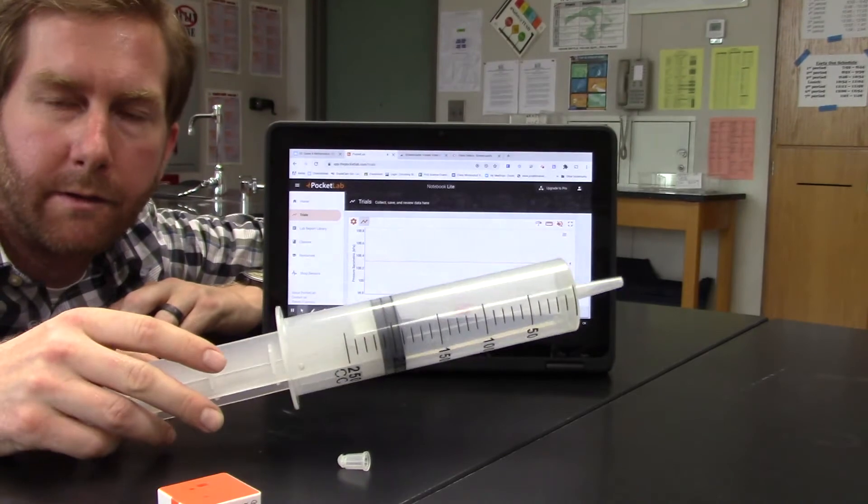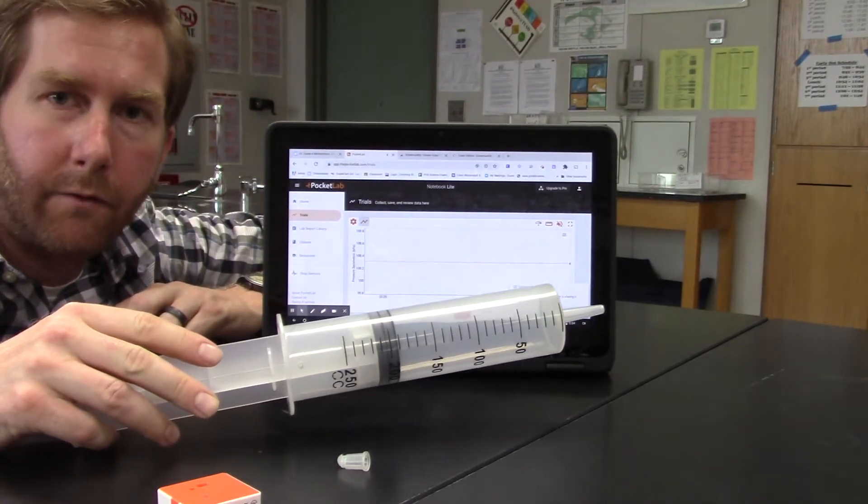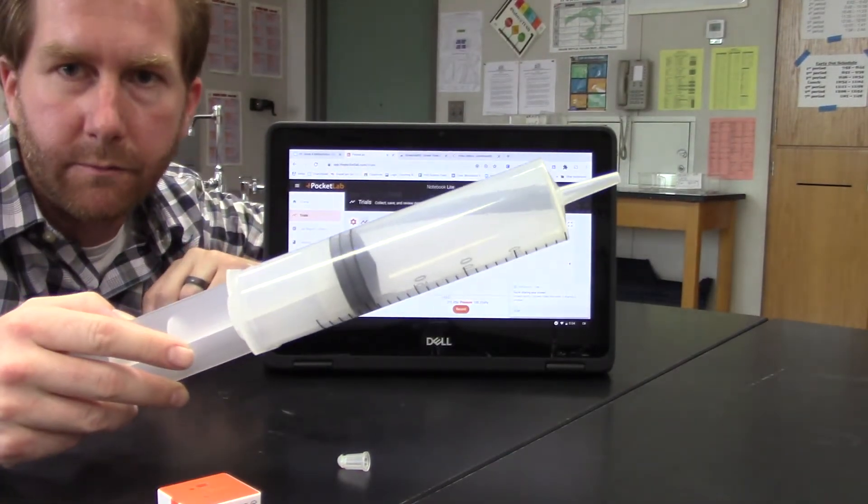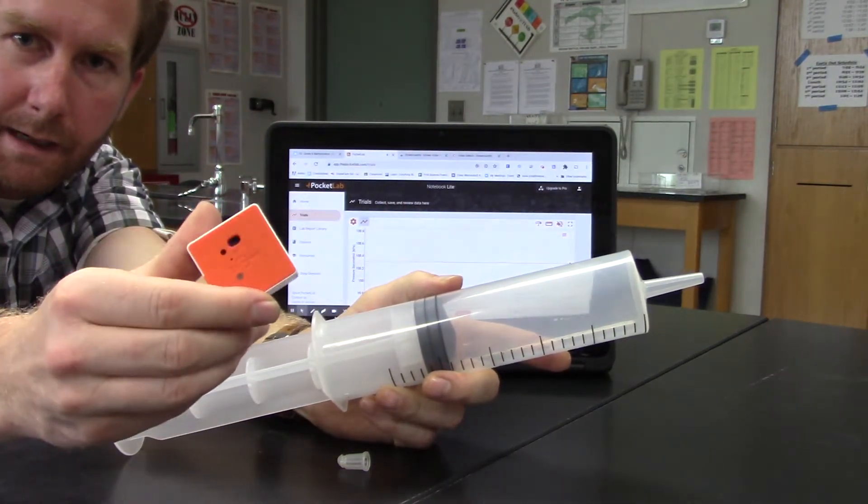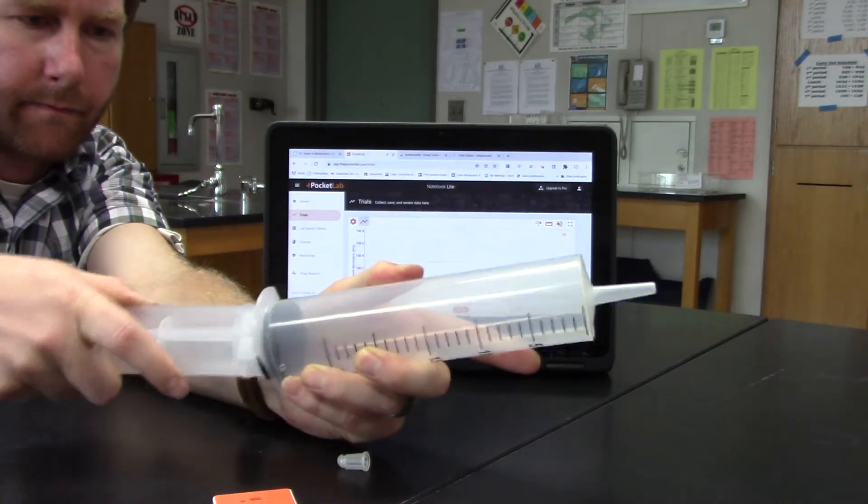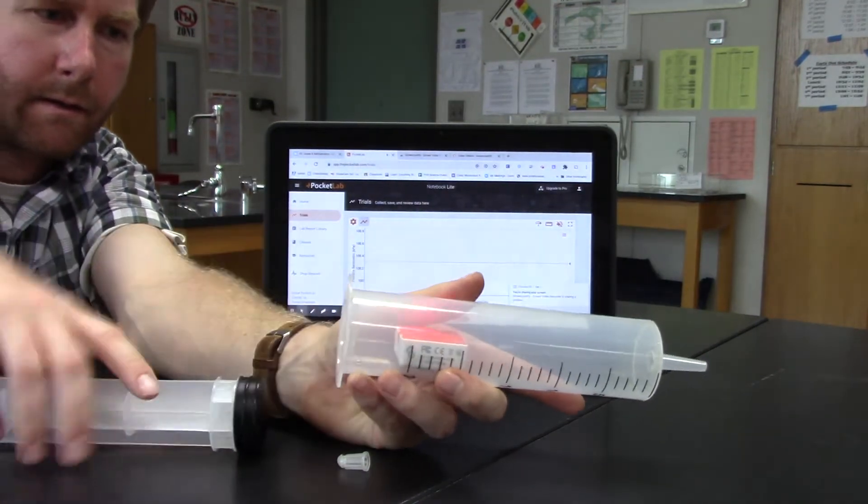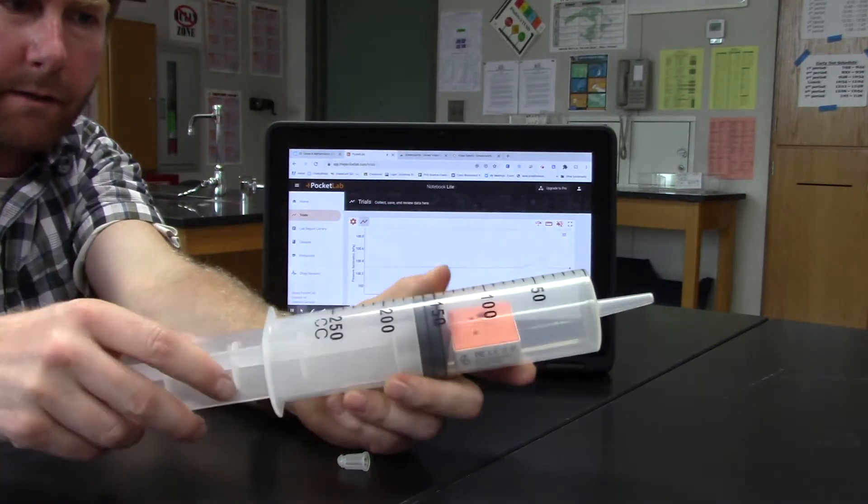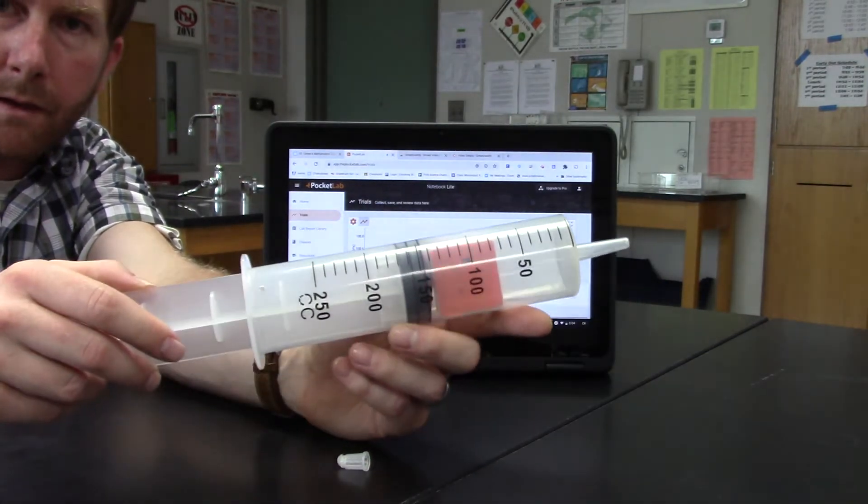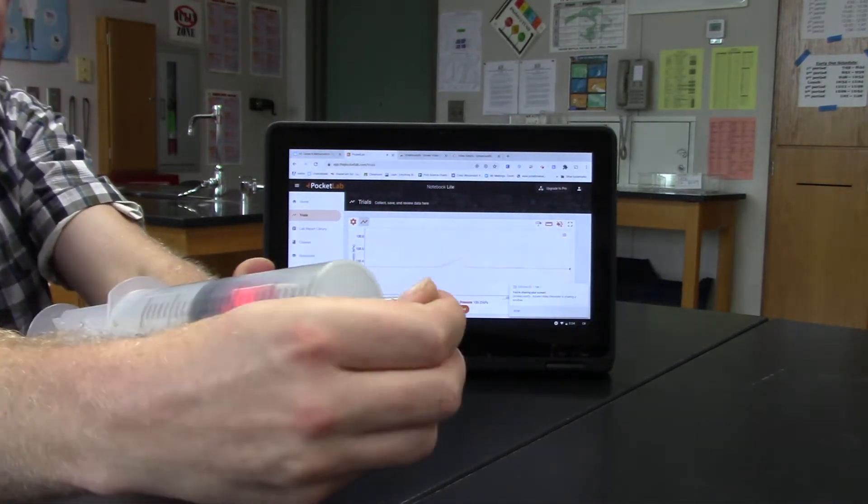So now we're going to look at the relationship of pressure and volume. So I have this syringe and I'm going to put the Pocket Lab inside of the syringe. And we'll put this right about in the middle here, and then we'll cap the syringe.